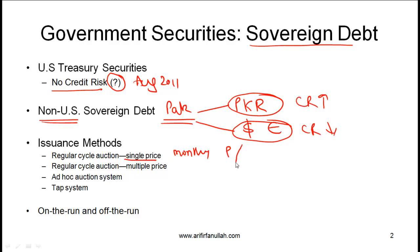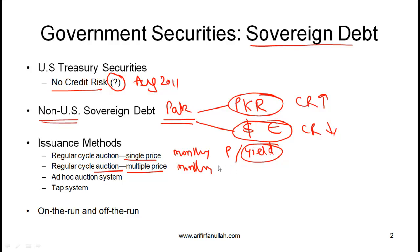That single price corresponds to a single yield at which the bonds are finally issued — clearly the highest yield that the government is paying to all the bidders. Regular cycle auction with multiple price is again an auction but with multiple prices. So this might also be monthly, but the government securities can be sold at different prices to different bidders.